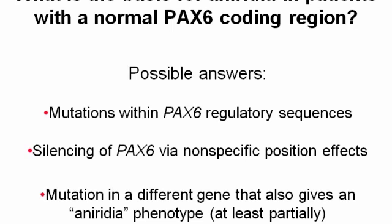One question is: what if you look for a PAC6 mutation in the coding region and you don't find one — you get a report back saying no PAC6 mutations were found? Most people think that means there is no mutation in PAC6, and that's not necessarily true. If somebody has gone through and literally looked letter by letter and shown that all of the exons are normal, it could be that there is a mutation in one of the PAC6 regulatory sequences that normally controls whether the gene is on or off. A different possibility is that PAC6 has been turned off by non-specific position effects. The third possibility is that there's a mutation in a different gene that also gives an aniridia phenotype.